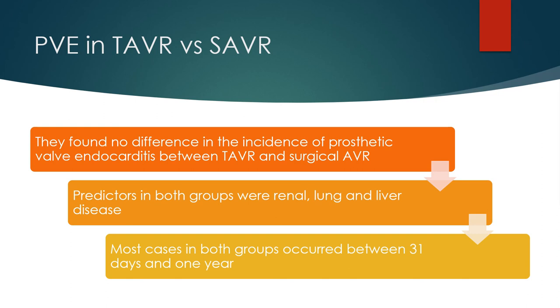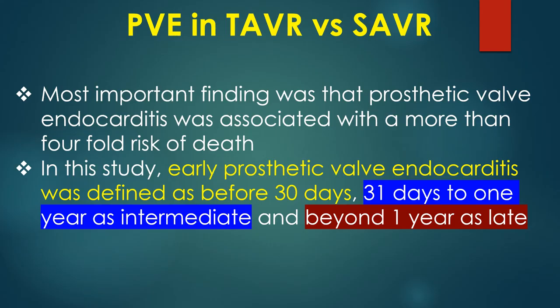Predictors in both groups were renal, lung, and liver disease. Most cases in both groups occurred between 31 days and 1 year. The most important finding was that prosthetic valve endocarditis was associated with a more than 4-fold risk of death. In this study, early prosthetic valve endocarditis was defined as before 30 days, 31 days to 1 year as intermediate, and beyond 1 year as late.